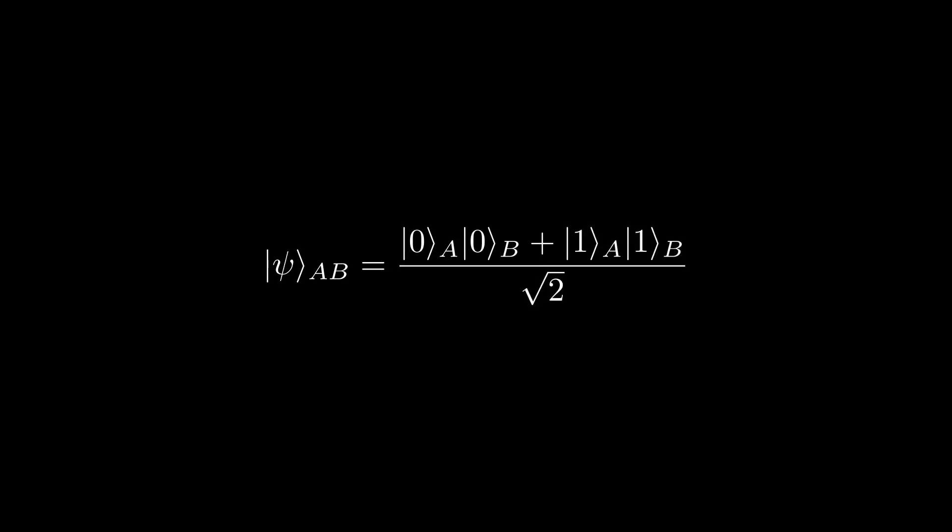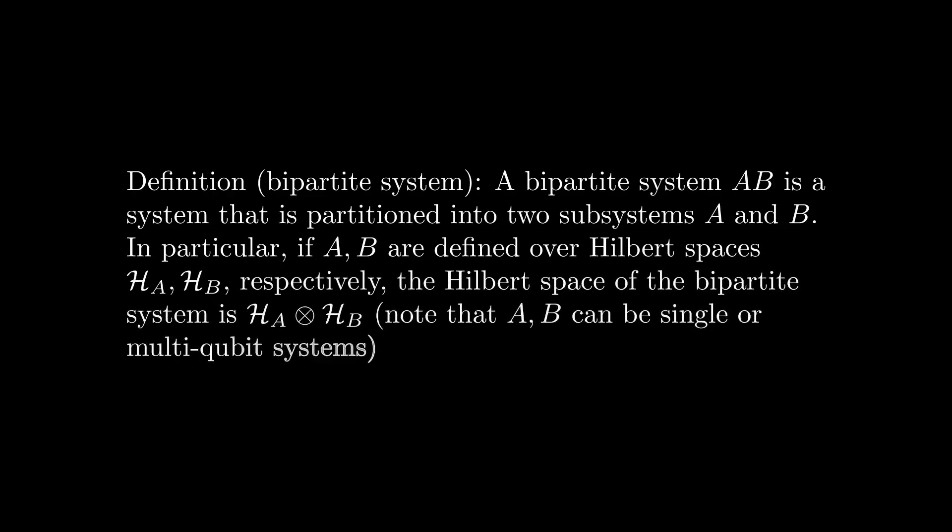In the previous video, I gave an example of a system where we had qubit A and qubit B entangled in a Bell state, and we were concerned about the state of qubit A without qubit B. This type of system is referred to as a bipartite system. In particular, a bipartite system is a system with two subsystems A and B with Hilbert spaces HA and HB, such that the Hilbert space for the entire system is defined as HA tensor HB.